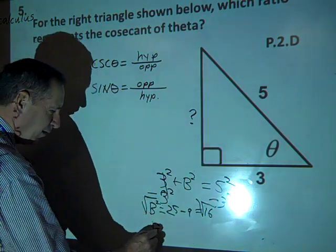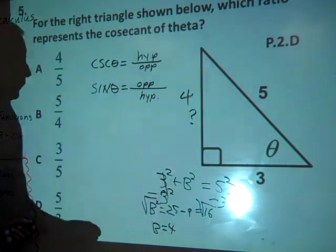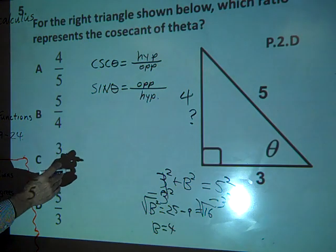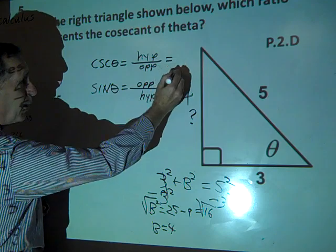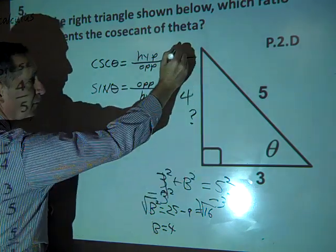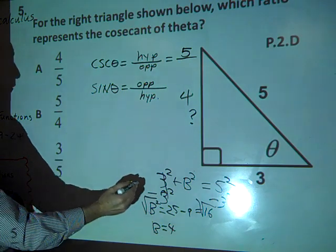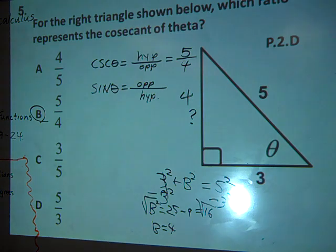So now we have this side, it's 4. So now can we do this one? Yeah, so we have the hypotenuse. And the hypotenuse is? 5. 5. And the opposite is? 4. 4. So 5 fourths. So our answer to this is b.